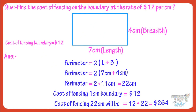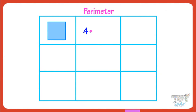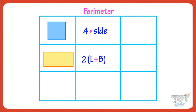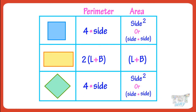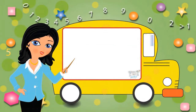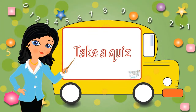Let's revise what we have learnt. Parameter of square is 4 times the side. Parameter of rectangle is 2 times length plus breadth. Area of square is side squared, or side multiplied by side. Area of rectangle is length times the breadth. In case of a rhombus, it is the same as a square. Now you may go ahead and take a quiz to learn more. Bye-bye!